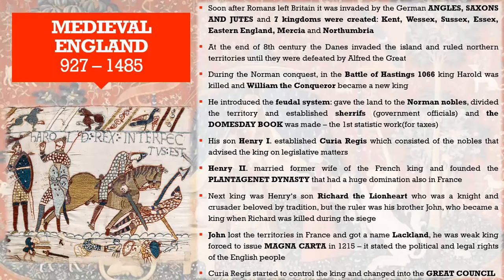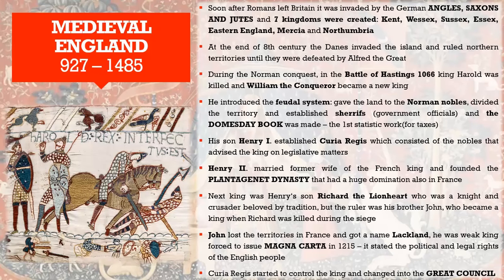Then we had the Norman Conquest, mentioned as well, with the Battle of Hastings in 1066 where King Harold was killed by William the Conqueror, who became the next king. William the Conqueror was Norman — from northern France, the territory established by the Vikings in France. He brought a lot of French culture to the throne and also brought territorial disputes, which led to what happened during the Hundred Years' War.